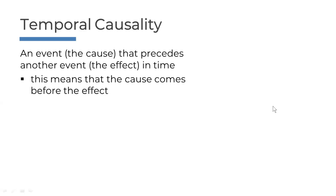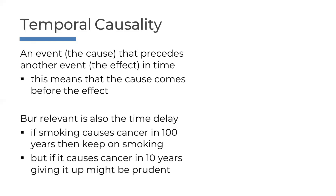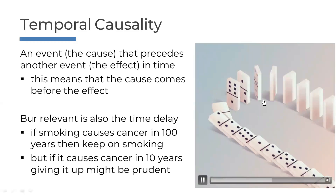This paper is about temporal causality, defined as an event — the cause — that precedes another event — the effect — over time, meaning the cause comes before the effect. Also relevant is the time delay. If smoking causes cancer in 100 years, then who cares, just keep on smoking. But if it causes cancer in 10 years, giving it up might be a very wise thing to do.